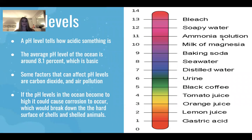A pH level tells how acidic something is. The average pH level of the ocean is around 8.1, which makes it basic. Some factors that can affect pH levels are carbon dioxide and air pollution. If the pH level in the ocean becomes too high, it could cause corrosion to occur, which would break down the hard surface of shells and sheltered animals. Here there is a picture of different things and their pH levels, and seawater has an average pH level of around 8.1, so it's right here on the spectrum.